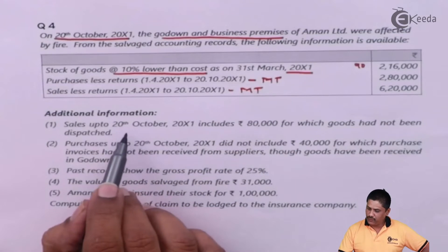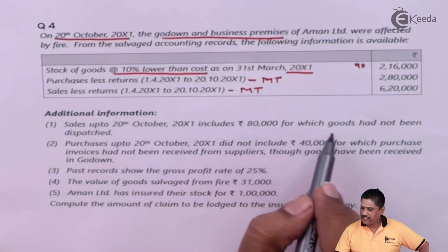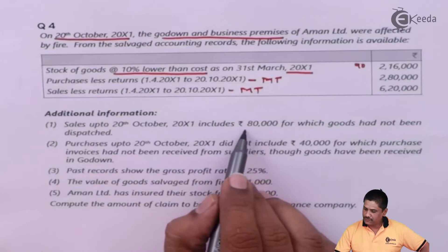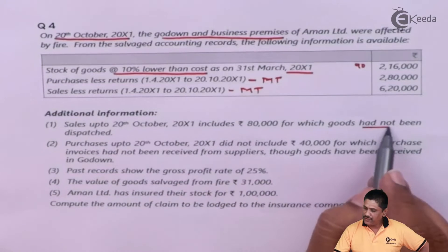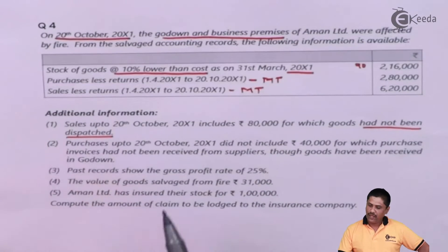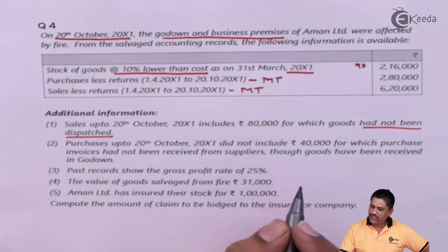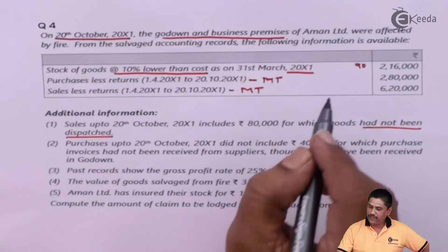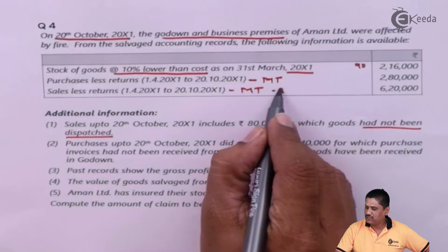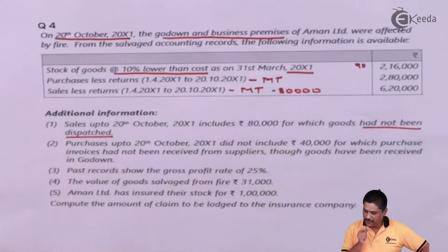Additional information: sales up to 20th October 200X1 include 80,000 for which goods have not been dispatched. If you remember, sales will include only those goods which are dispatched by you. Since we have not dispatched 80,000 worth of goods, I will minus 80,000 from sales in this period.